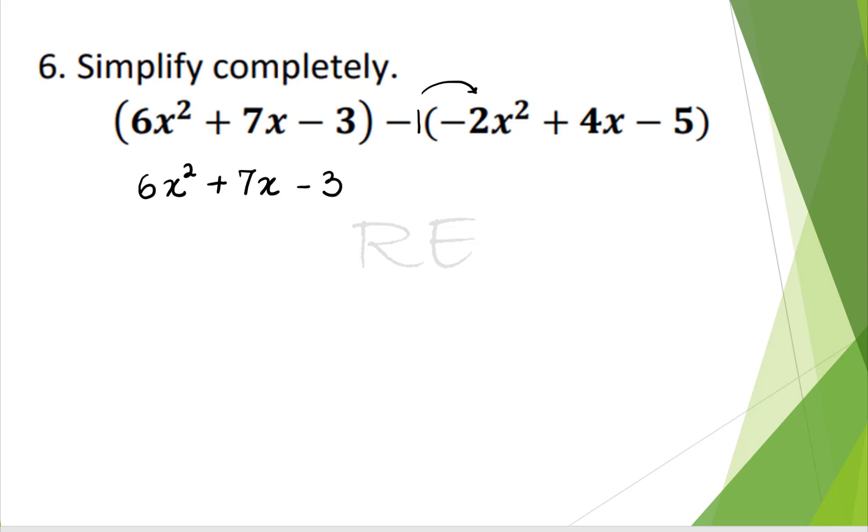And because there's a negative sign before the parenthesis, we're going to consider it to be negative 1 and distribute it. Negative 1 times negative 2x squared, positive 2x squared. Negative 1 times 4x, negative 4x. Negative 1 times negative 5, positive 5.